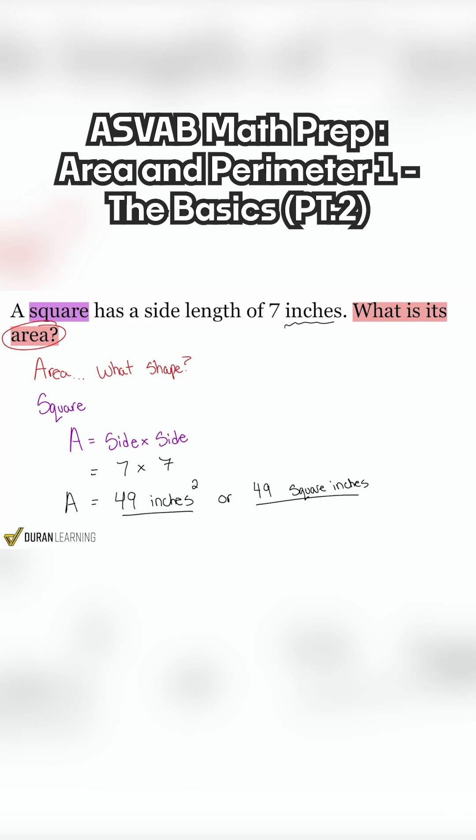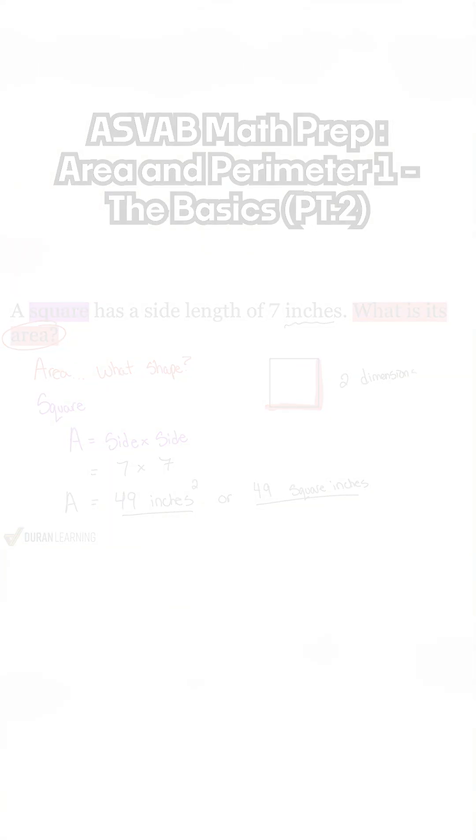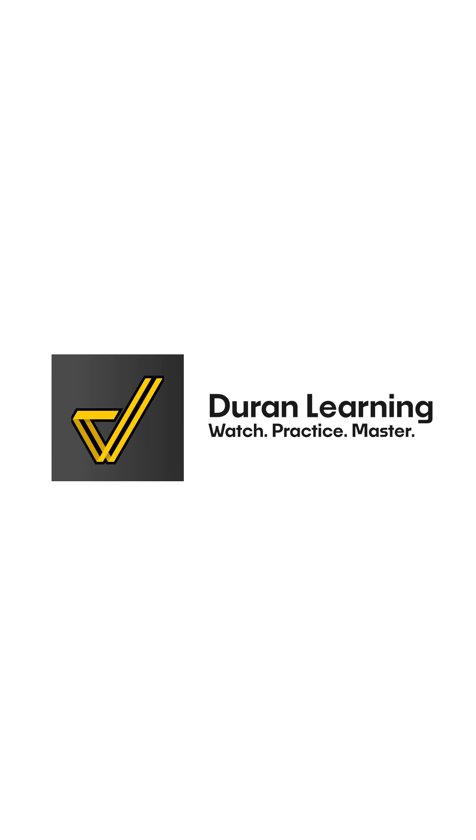But remember, when it comes to area, we are dealing in two dimensions. We are multiplying this by this. So it's two dimensions, and that's why we have it as square inches. So here we are.